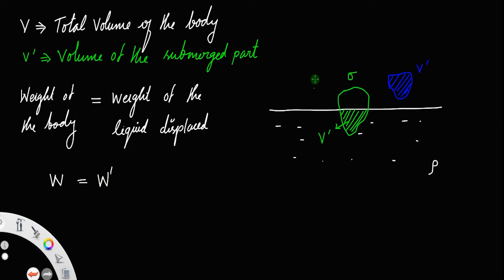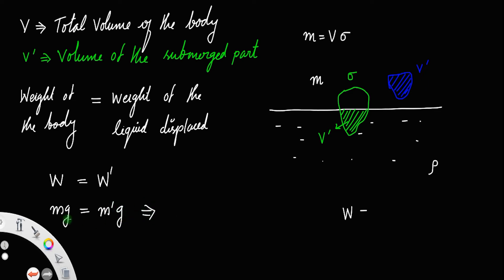The weight of the body equals mass into gravity. Let m be the mass of the body; mass equals volume into density, so m equals V into sigma, and weight equals V into sigma into g. The weight of the displaced liquid is m dash into g, where m dash equals V dash into rho, so the weight of displaced liquid equals V dash into rho into g.